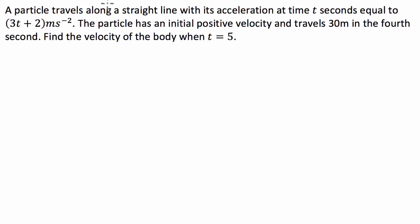The question says the particle travels along a straight line with its acceleration at time t seconds equal to this. The particle has an initial positive velocity and travels 30 meters in the fourth second. Find the velocity of the body when t equals 5.